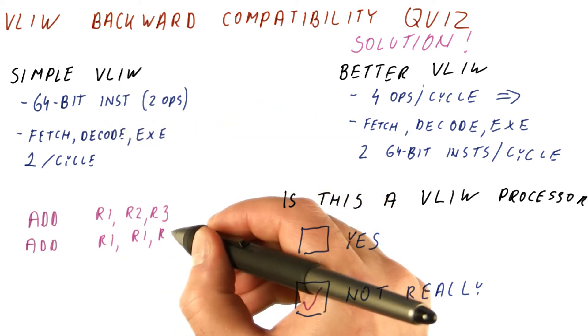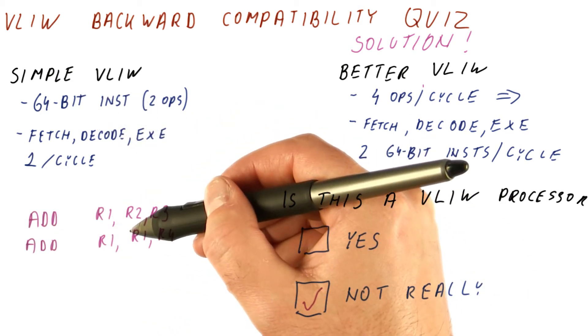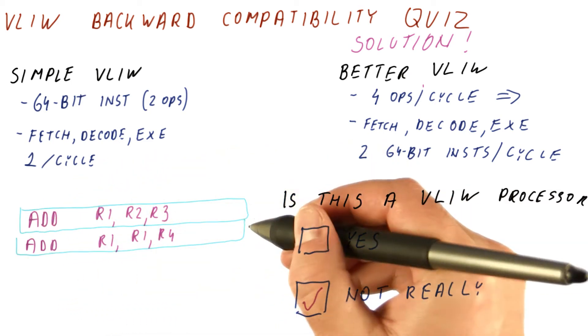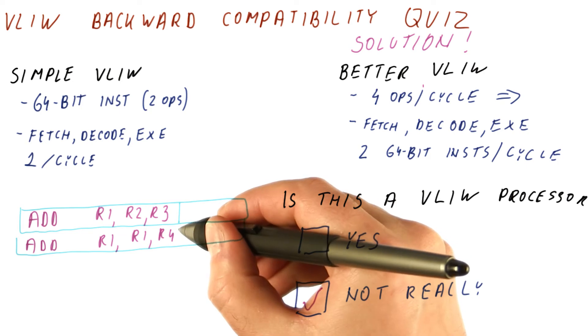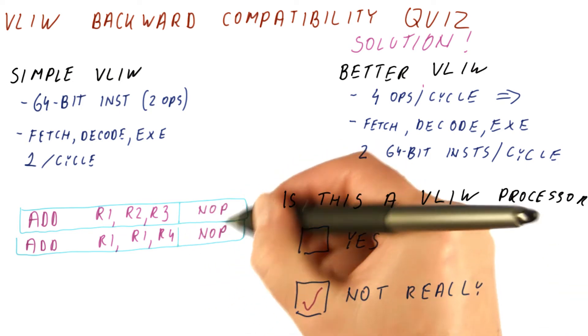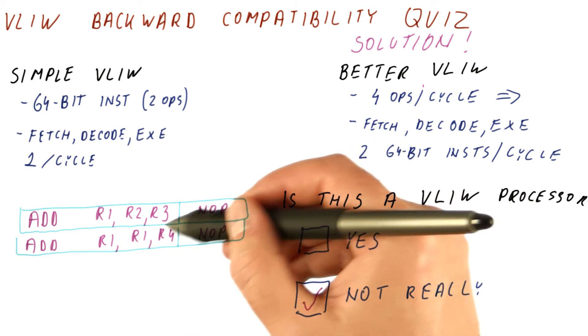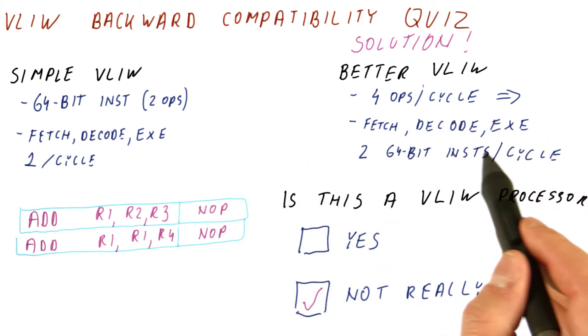In fact, if we have something like this where we have a data dependence, the compiler will put these operations into two separate VLIW instructions and put NOPs for the second operation to ensure that we first do this and then we do this. If this processor now is trying to fetch the code and execute two such 64-bit instructions per cycle,